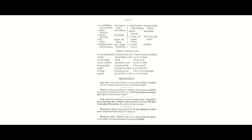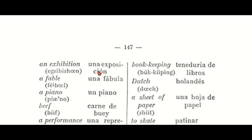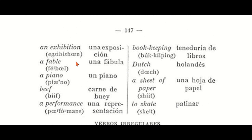We have a little bit more vocabulary. An exhibition — una exposición; a fable — una fábula; a piano — un piano; beef — carne de buey; a performance — una representación; bookkeeping — teneduría de libros; Dutch — Holanda; a sheet of paper — una hoja de papel; to skate — patinar.